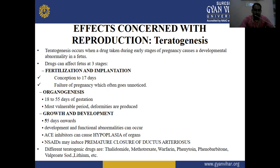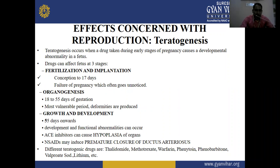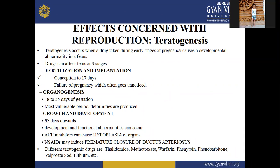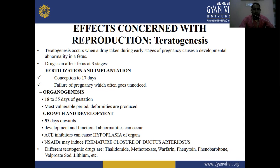Organogenesis is the integrated process that transforms an amorphous mass of cells into a complete organ in the developing embryo. Organogenesis occurs between 18 to 55 days of gestation. Gestation is the period of time between conception and birth. This is the most vulnerable period — deformities are produced during organogenesis. Next is the growth and development phase.